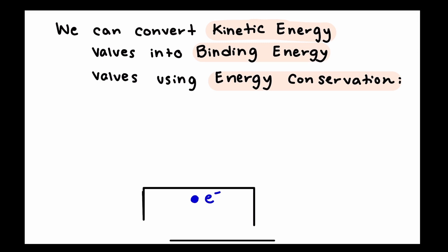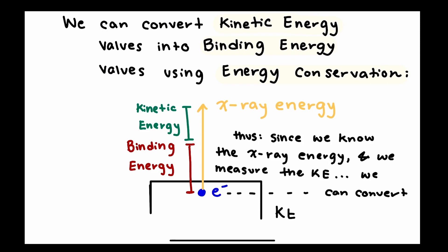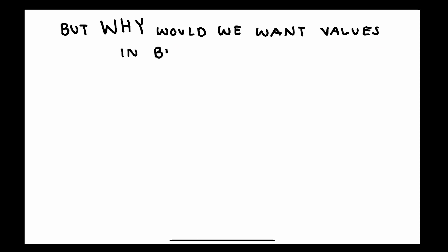Going back to this energy conservation idea, we have that electron inside our surface, and we're giving it a certain amount of energy through that x-ray. We then talked about how much binding energy is involved, and what's left over is the kinetic energy that we measure. Since we know how much energy we're giving through that x-ray and we're measuring the kinetic energy, we can convert those over into binding energies. But why would we want these in binding energy values rather than in kinetic energy?